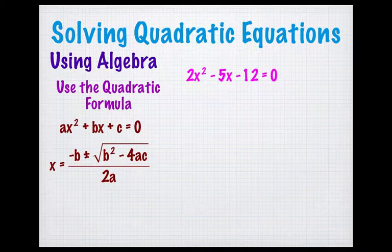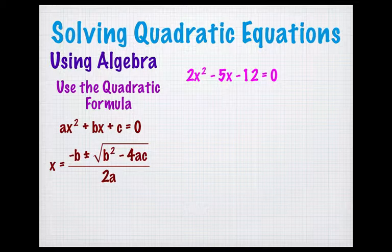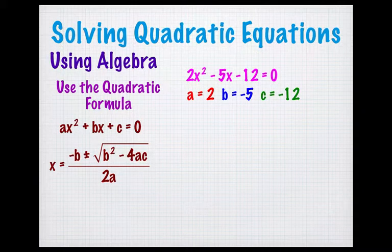So, look at an example: 2x squared minus 5x minus 12 equals 0. It's equal to 0, and that's important. So I first identify a, b, and c. a is always the coefficient on the x squared term, b is always the coefficient on the x, and c is always the constant.